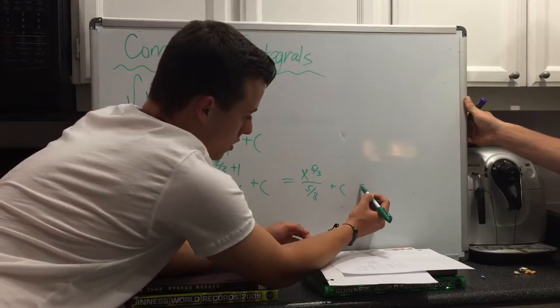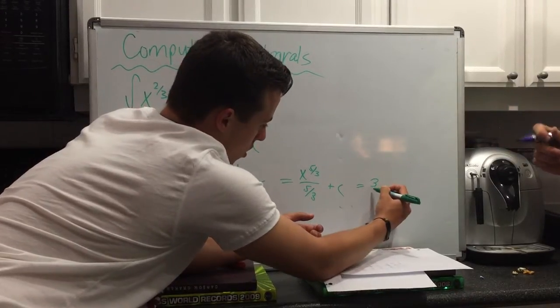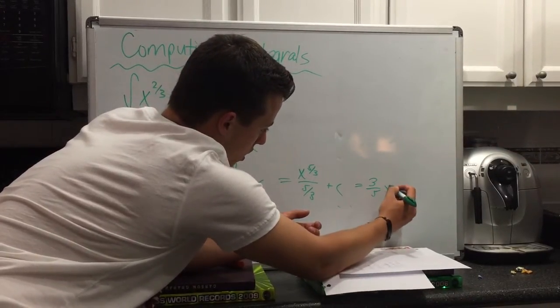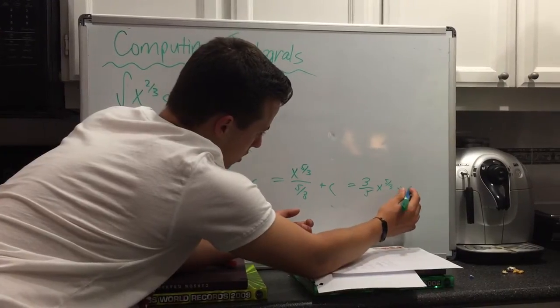it's the same as multiplying by 3/5. So we end up with 3/5 x to the 5/3 plus c.